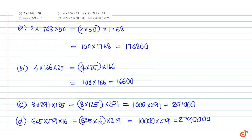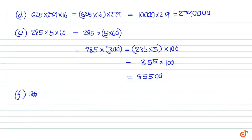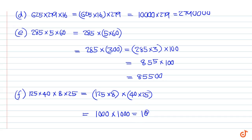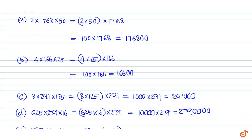Part e: 125 into 8 into 14 into 25. This is equal to 125 into 8 into 14 into 25, which is equal to 1,000 into 1,000, which is equal to 1,000. These are our answers.